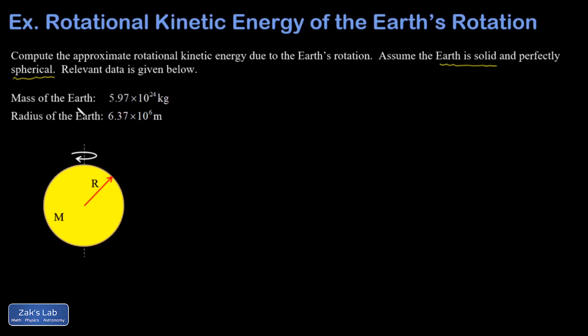We're given the mass. We're given the radius. And here's a picture of the Earth. If I model it as a solid sphere, I have to use the moment of inertia formula, I equals two-fifths MR squared. And then this rotational kinetic energy is going to be given by one-half I omega squared.